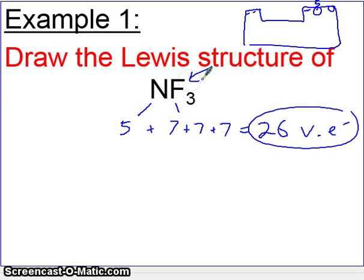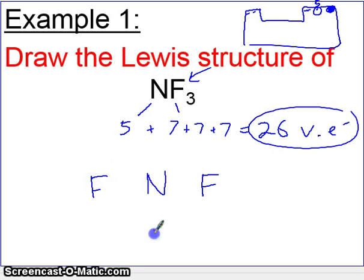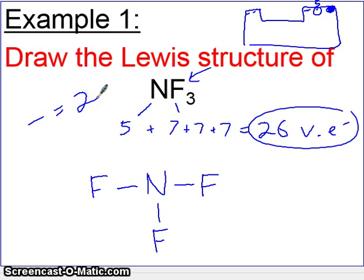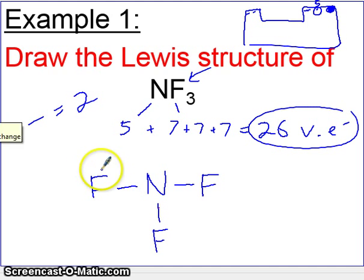We cannot have more or less than 26. Rule number two says put the least electronegative element in the middle — the less electronegative one is nitrogen, since fluorine is the most electronegative of all and will never be in the middle. Let's put nitrogen in the middle, then put a fluorine on the right, fluorine on the left, and fluorine below. There are four spots on every element. Then connect everything with a line — remember, a line means two electrons. So far we've placed six electrons.